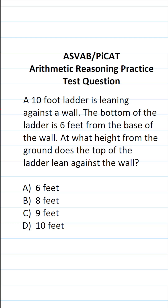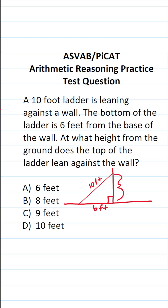For a problem like this, it's probably in your best interest to make a quick sketch. On the actual ASVAB and Pyquette, you should have scratch paper. Here's our wall, and here is our ladder leaning against the wall. We can see that the ladder leaning against the wall creates a right triangle. We know the ladder itself is 10 feet long, and we know it is 6 feet from the wall. We want to know how high up this wall the ladder is leaning, so that value is unknown.